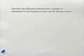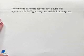Here's a problem we want to think about. Let's see it. Describe one difference between how a number is represented in the Egyptian system and the Roman system.